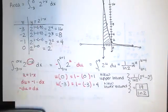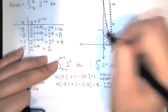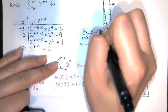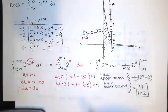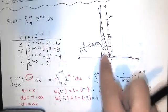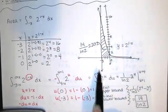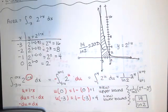I'm saying, what does that mean? This area right here is 14 divided by ln(2), which is about 20.2 square units. That's the area between that curve given by y=2^(1-x) between x=-3 and x=0.